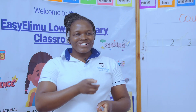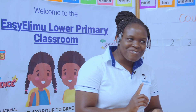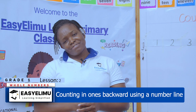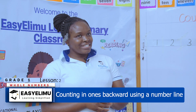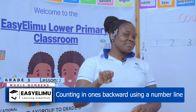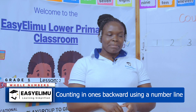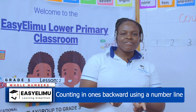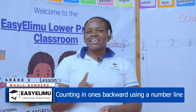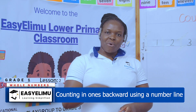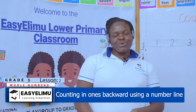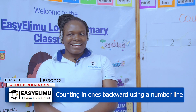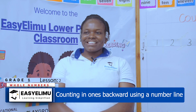One, two, three, four, five — once I caught a fish alive. Why did you let it go? Because it bit my finger so. Welcome to Easy Elimu, learning simplified.